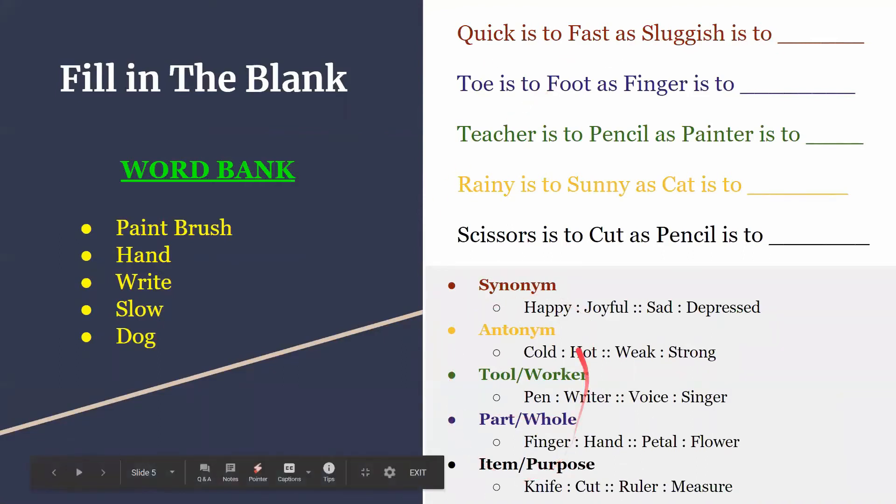As you can see, I color coded them as a hint. Quick is to fast as sluggish is to... quick and fast are the same thing so they must be synonyms. Sluggish is to paint brush? No. Hand? No. Right? No. Sluggish is to slow - that sounds like a synonym. It has to be slow.